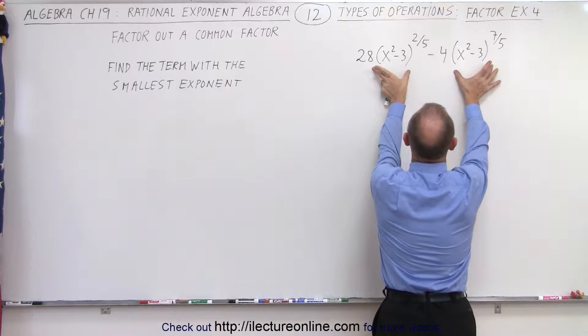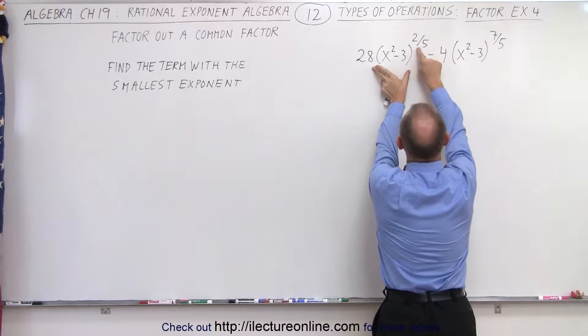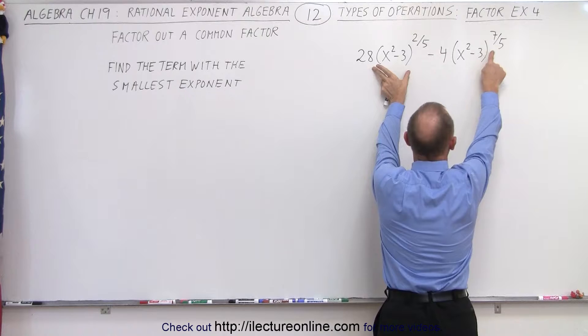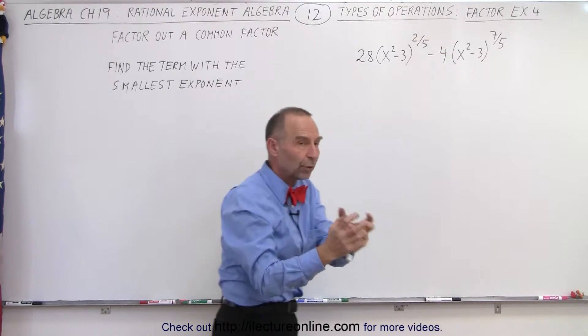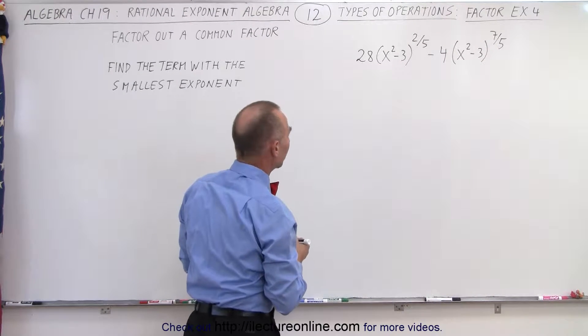But between these two portions, the common factor will be the one with the lowest exponent. 2 fifths is a smaller exponent than 7 fifths, so we're going to factor out that portion as well.